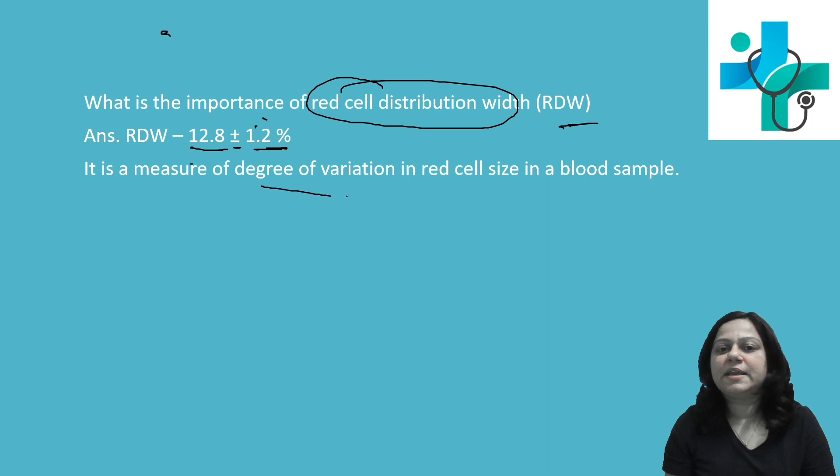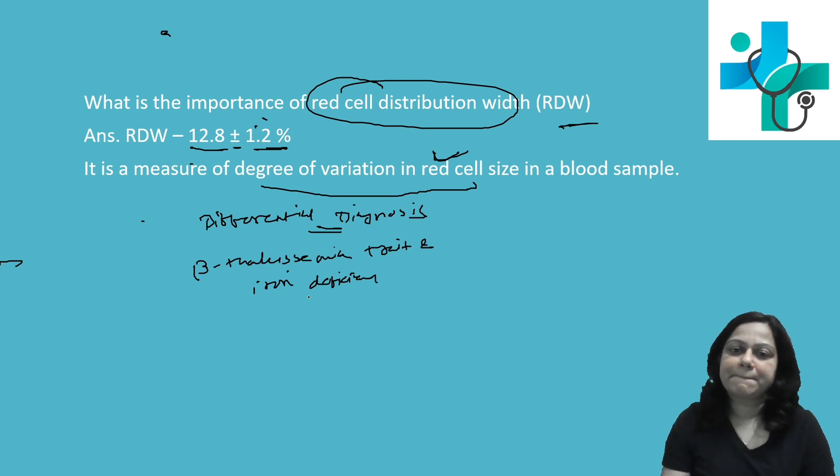It measures the degree of variation in red cell size in a whole blood sample. So, it is helpful in differential diagnosis of beta-thalassemia trait and iron deficiency anemia.